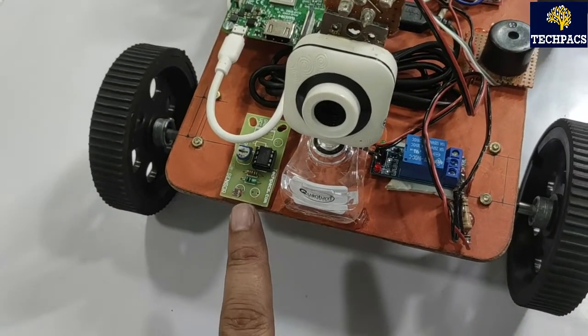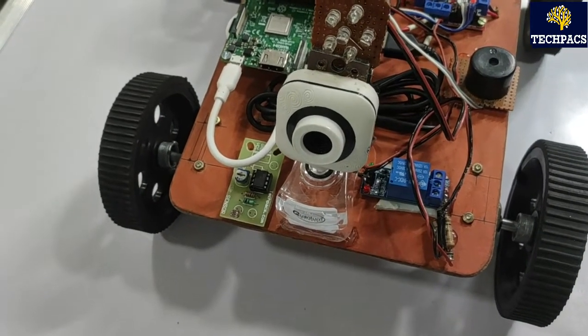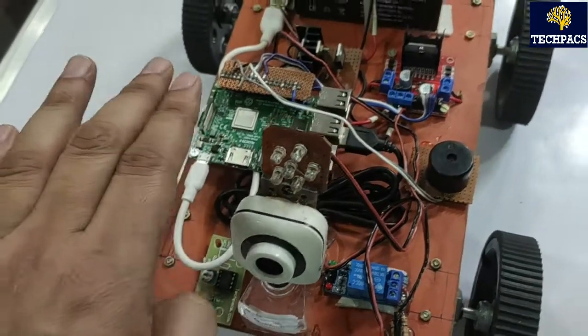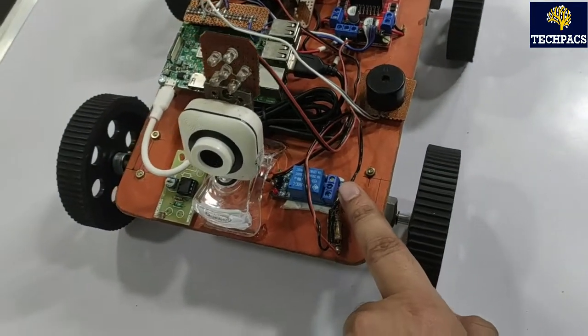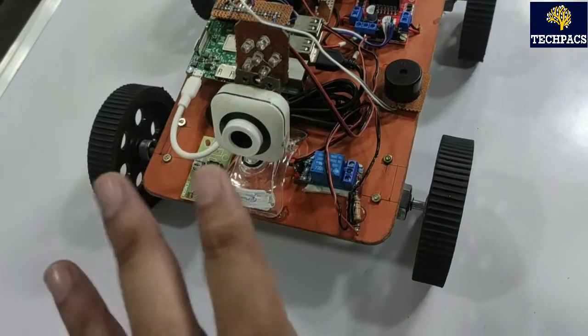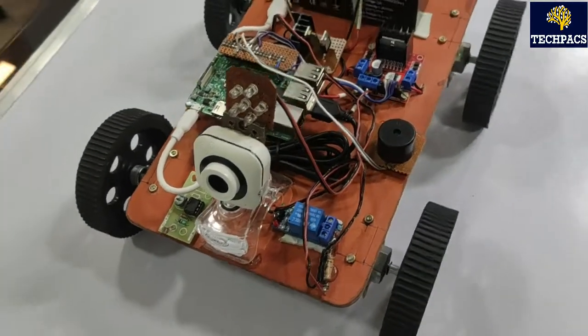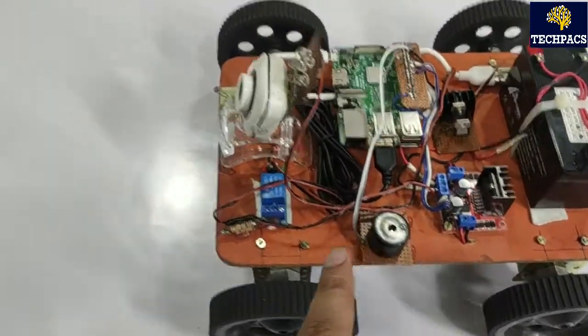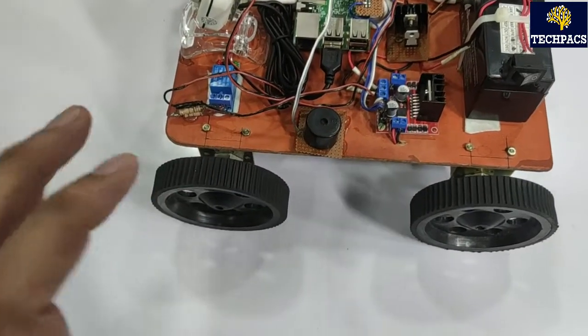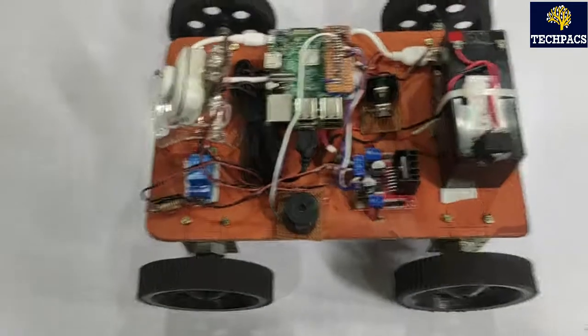Here is a light sensor, an LDR sensor. Once night or dark mode is detected, it will automatically send input to the controller. The controller will send the signal to the relay and these LEDs will glow so the camera can capture better. We have connected one buzzer so that once movement is detected by the camera, the buzzer will beep and it will capture that movement.